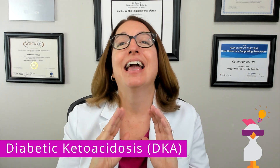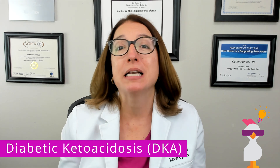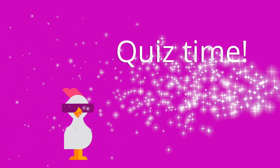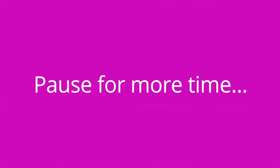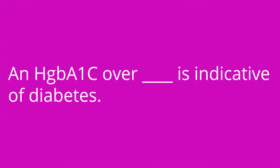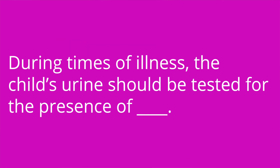It's quiz time — I've got five questions because we went over a lot of important information. Question one: Is cold, clammy skin, irritability, and diaphoresis indicative of hyperglycemia or hypoglycemia? The answer is hypoglycemia. Question two: An HgbA1c over blank is indicative of diabetes. The answer is 6.5%.